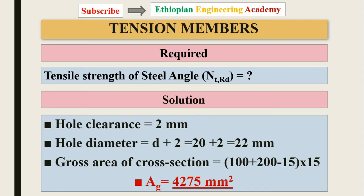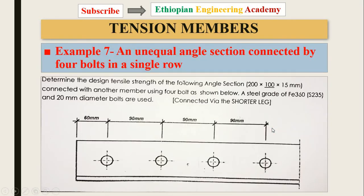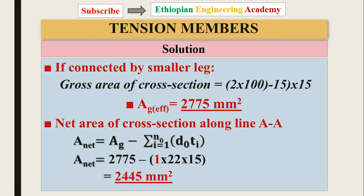The gross area equals 4,275 mm². For the case connected by the smaller leg, the gross area is 2 × (100 − 50) × 50. The effective gross area is taken as the minimum. The net area of the cross section along line A uses one hole dimension, and the formula subtracts the hole diameter times thickness from the gross area.